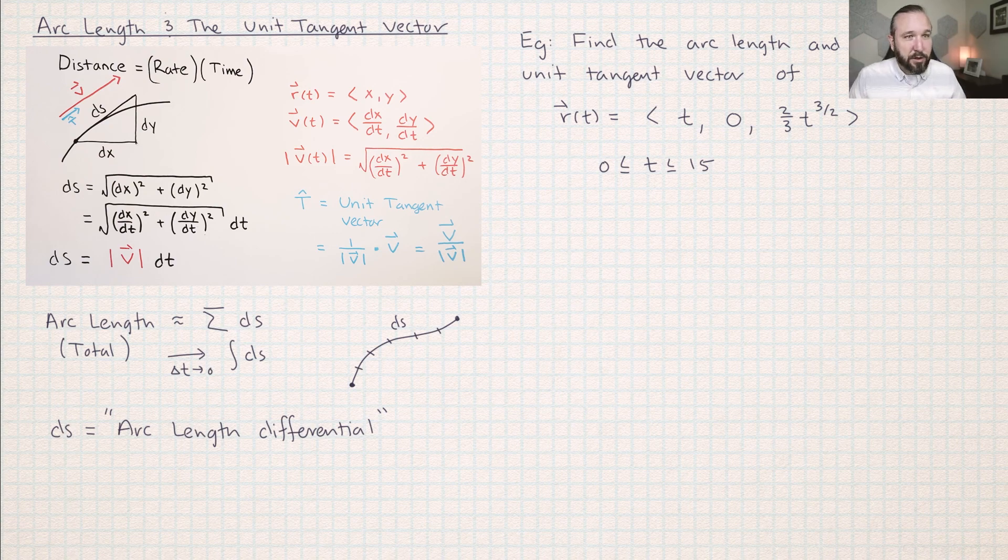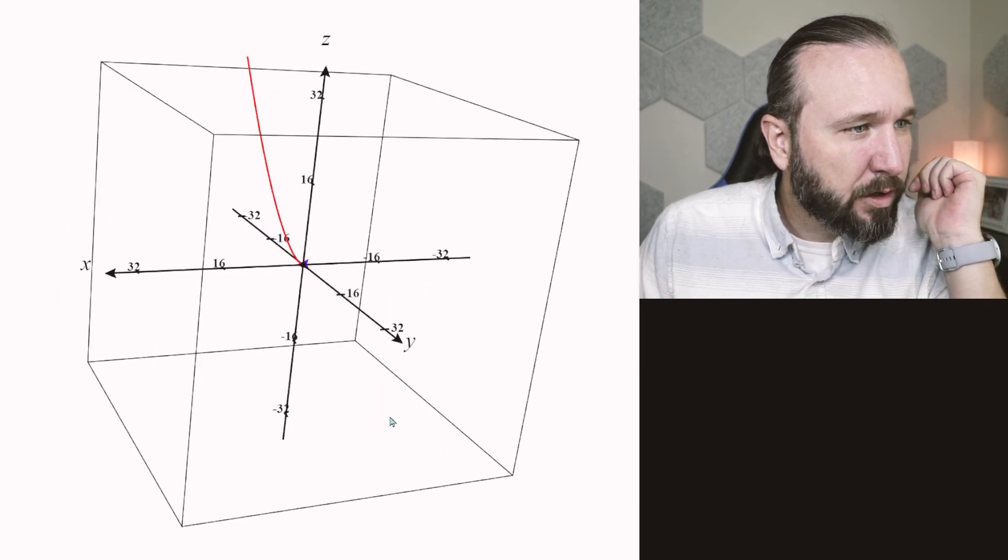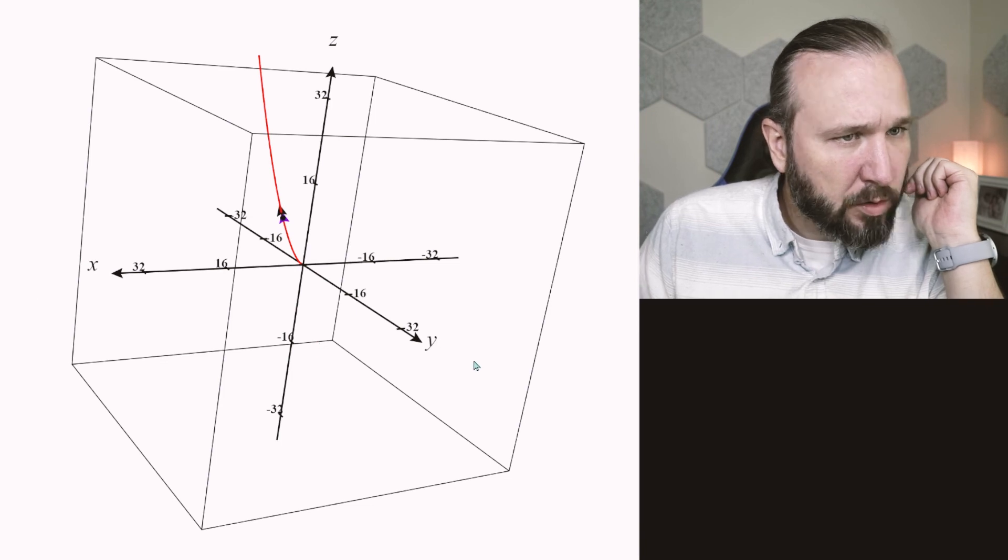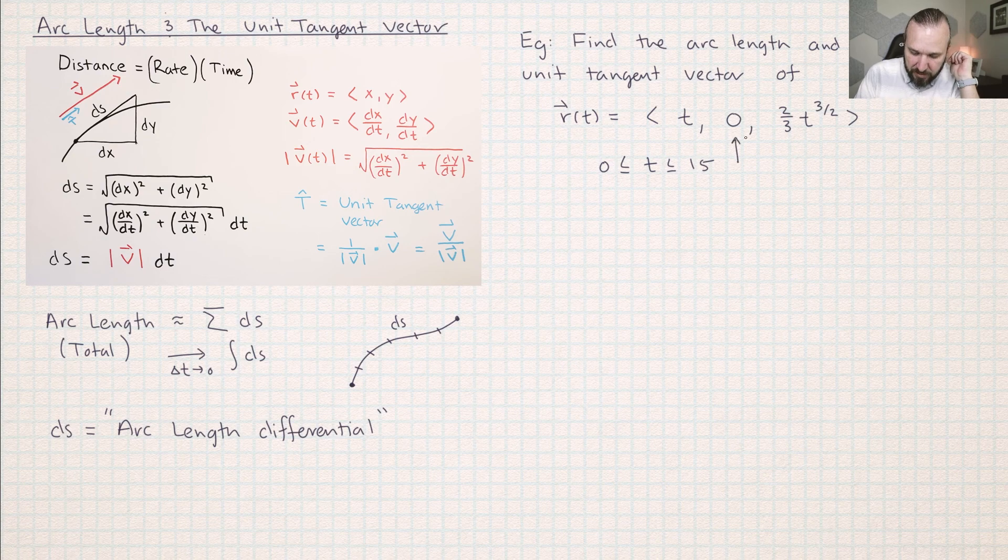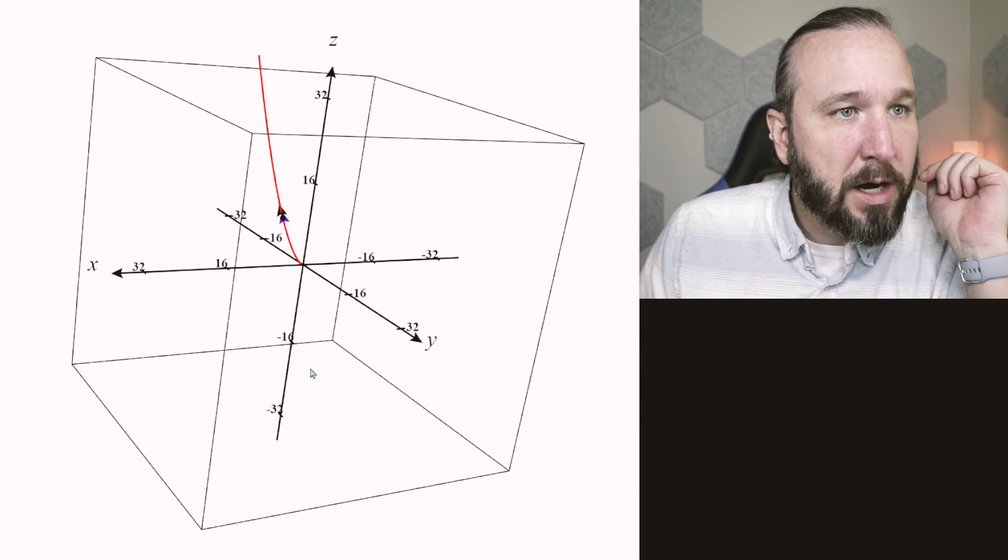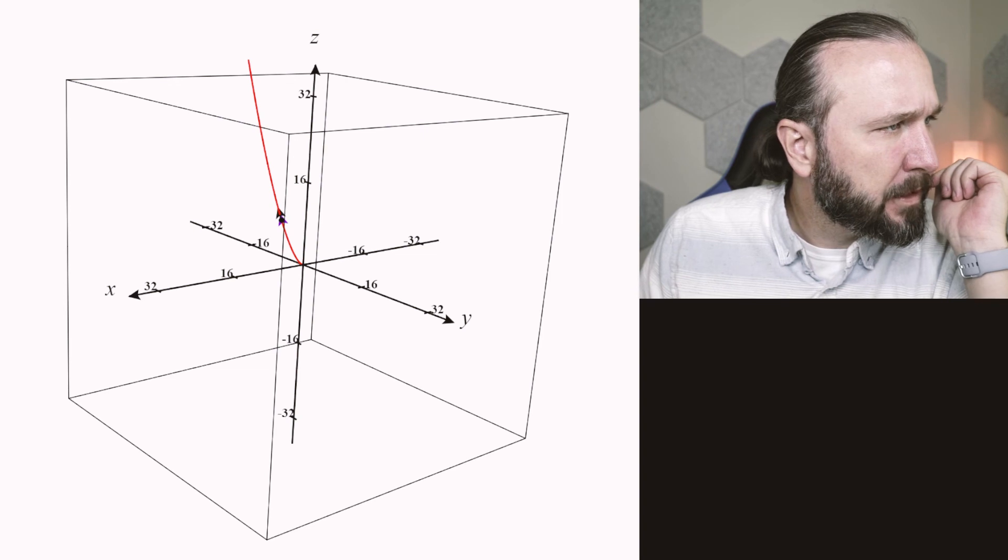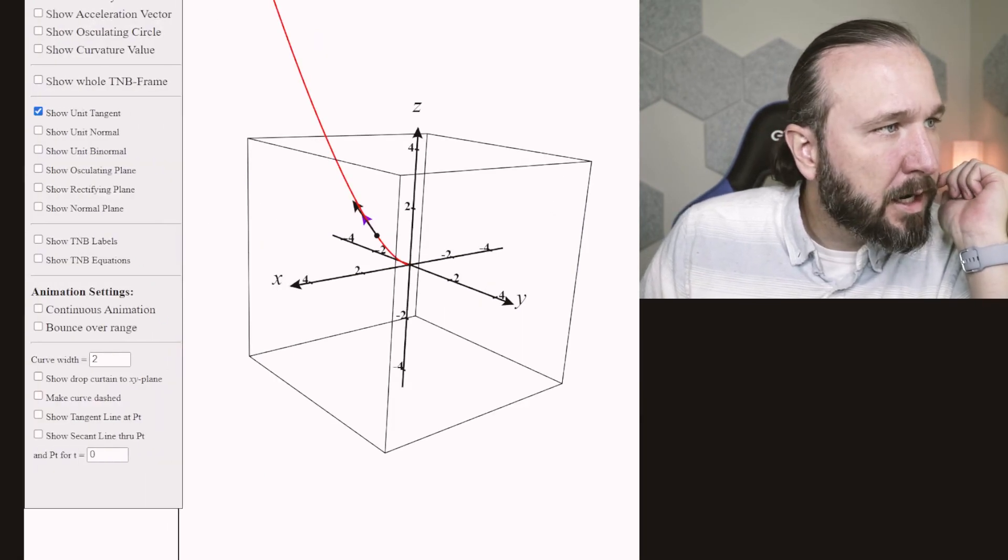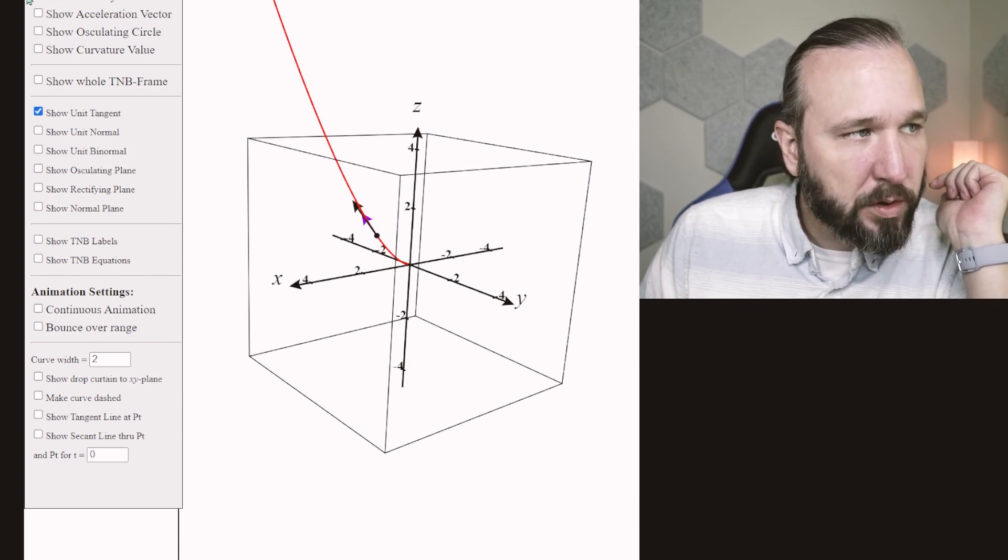Of course, I have graphed this curve in CalcPlot3D. So here we have a picture of the curve. And there is the point. I have also, you can see that this curve does not have anything in the y coordinate. It's a zero. So we never leave the x z plane. And let's just zoom in a little bit.